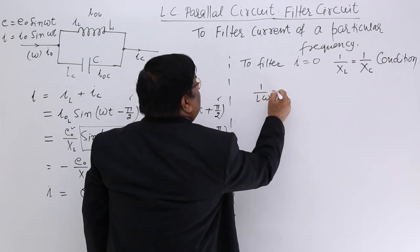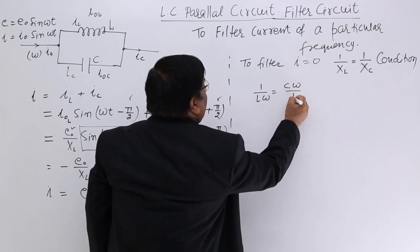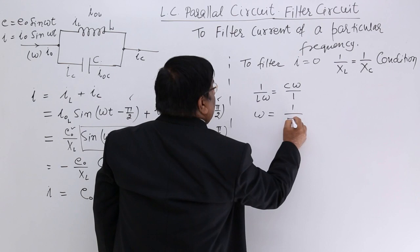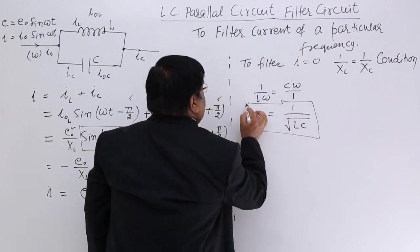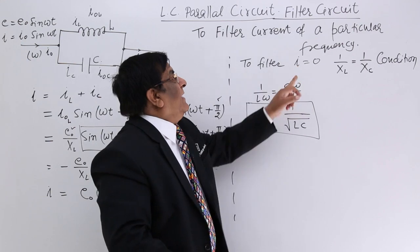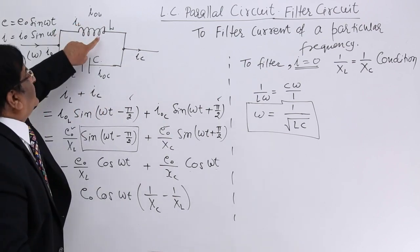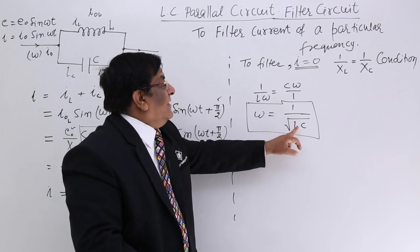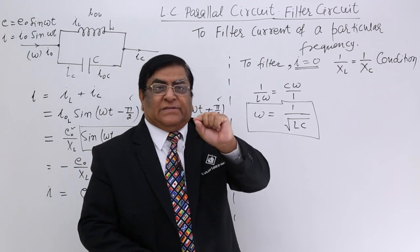1 upon Lω is equal to XC is 1 upon Cω. So this is Cω upon 1. And this gives us ω is equal to 1 upon root LC. This we have done number of times. This is the condition for filtering and making I is equal to zero. That means if we choose this L and C with certain particular values such that this equation is satisfied. Omega is the frequency of that particular current.